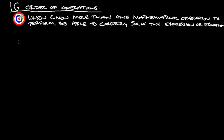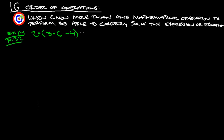Let's take a look at example 14 from page 32. That gives us 2 times, in parentheses, 3 times 6 minus 4, close parentheses, plus 7. Using PEMDAS, we can work this out.